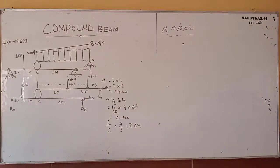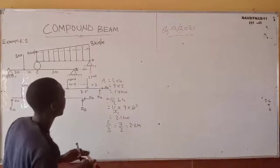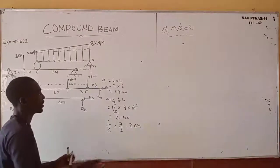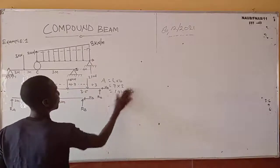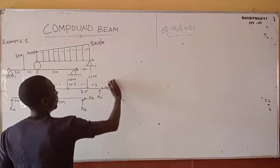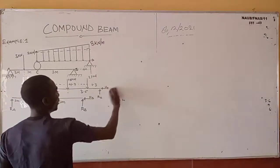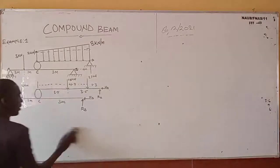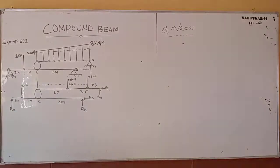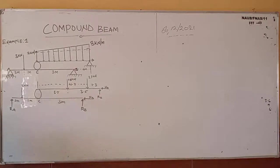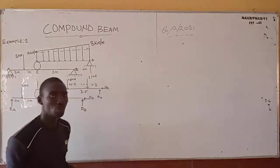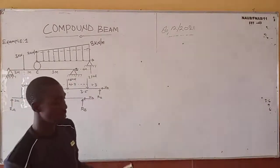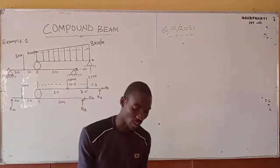The next thing is to separate the beams and solve for each support individually. Now let me explain the internal hinge. When we draw the free body diagram and separate the two beams, the forces at the internal hinge must be equal and opposite — action and reaction are equal and opposite.